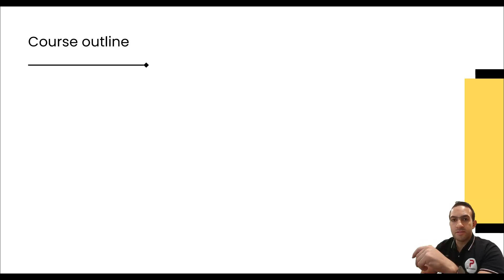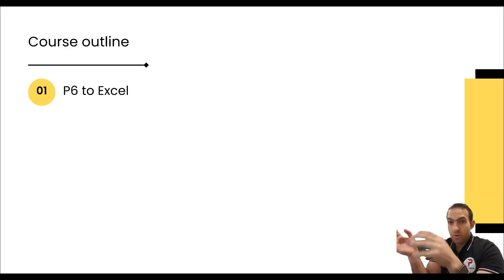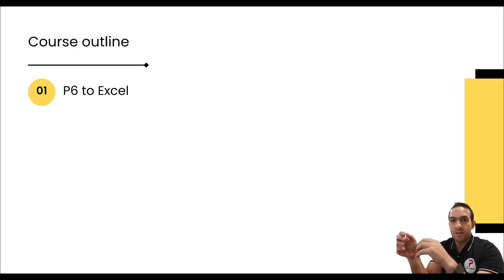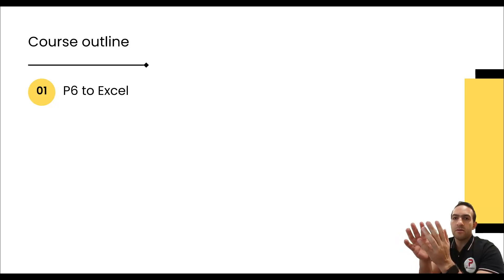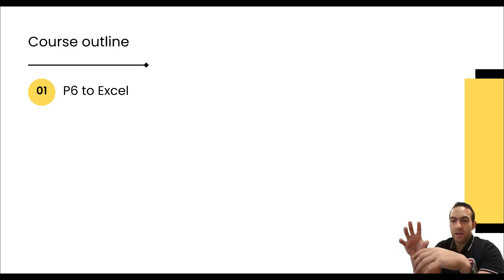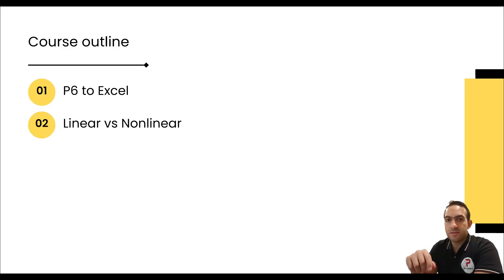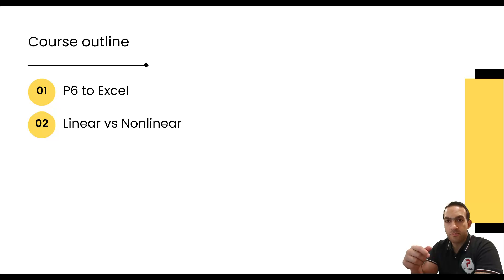In this series of videos, we will see how to export data from P6 into Excel and how to format it to be more visual — looking like P6 in terms of coloring and grouping. After that, we will discuss the difference between linear and nonlinear distribution for assigned resources.